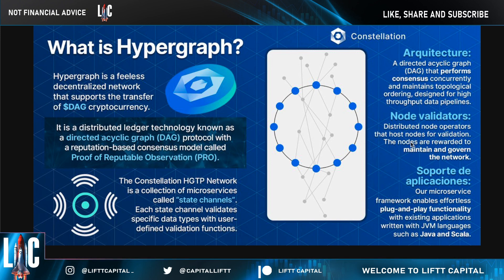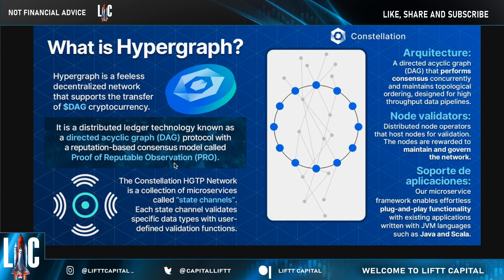DAG is part of the Constellation Hypergraph, a fee-less decentralized network or DLT that supports the transfer of the DAG cryptocurrency. It's a DLT known as a Directed Acyclic Graph — or DAG — protocol, with a reputation-based consensus model called Proof of Reputable Observation, or PRO.